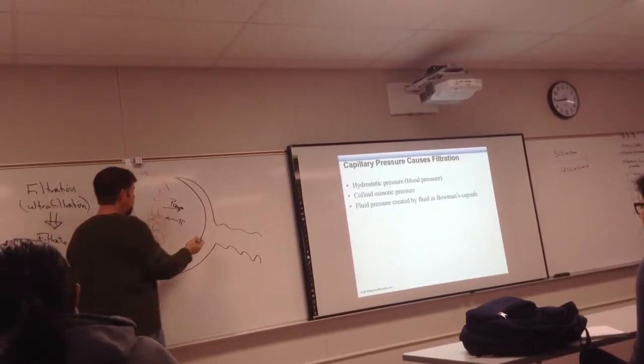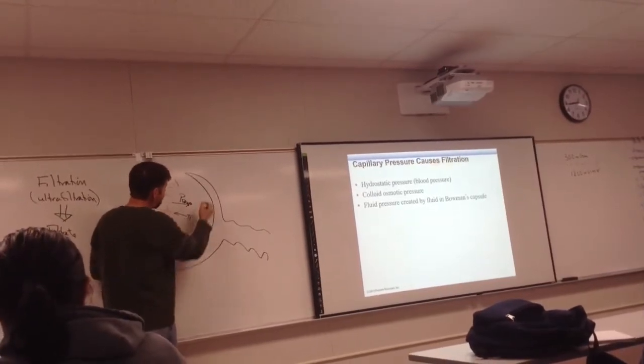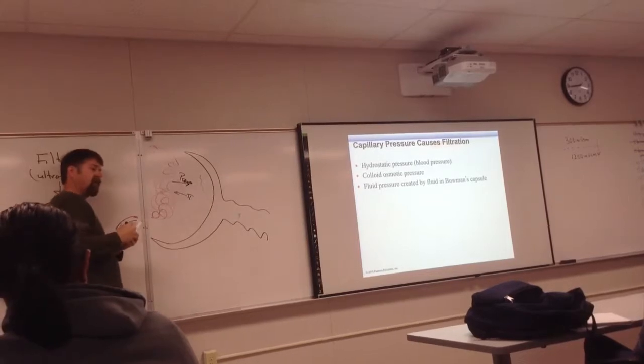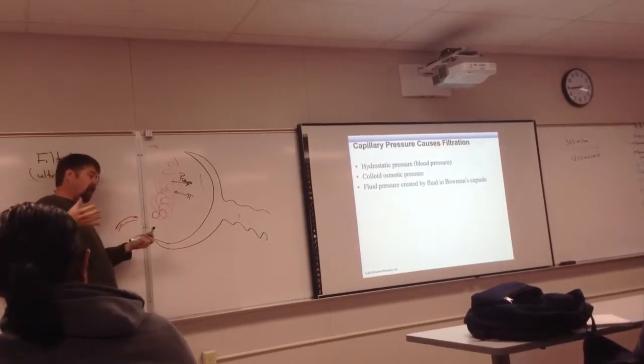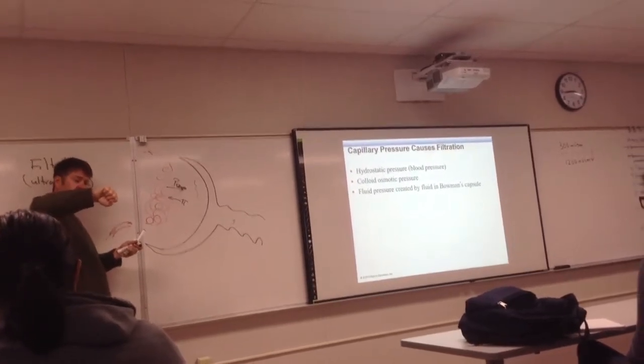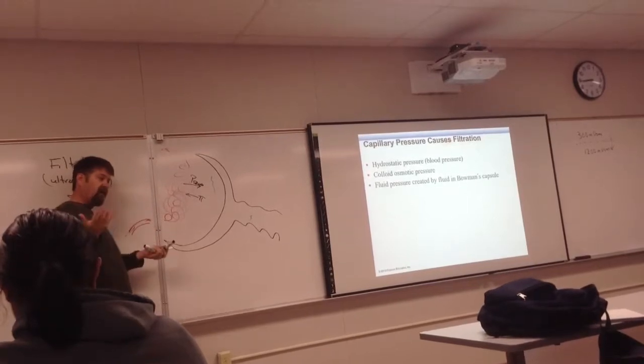But as you start making filtrate in here, as it collects, where does it have to drain? It has to drain out this proximal convoluted tubule. Now imagine a funnel. If you start pouring water in a funnel at a rate faster than it can come out the bottom end, it's going to overflow.